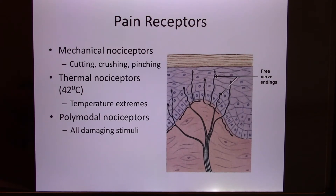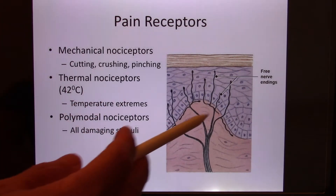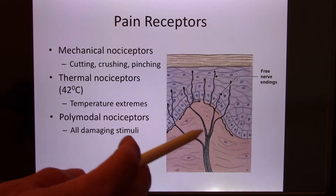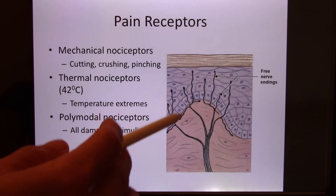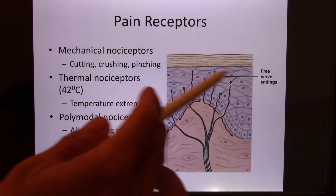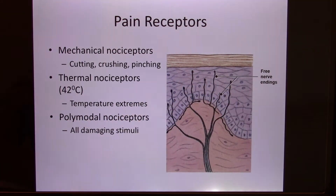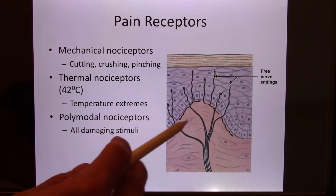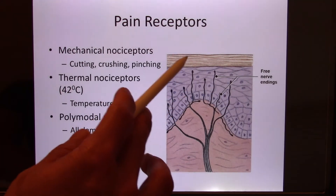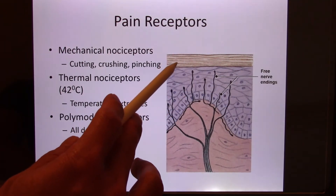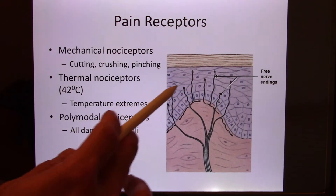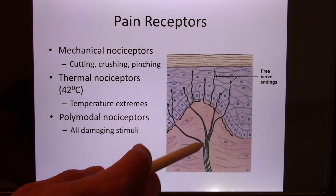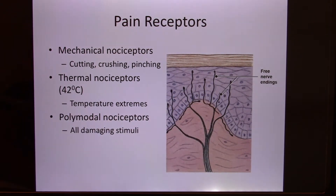Now let's look at something we did not cover last time: the pain sensation. The pain from your skin — your skin has free nerve endings. That's the first sensory neuron, and it's a simple receptor with no special structure. If you damage your skin, the damaged tissue will release chemical signals, which are picked up by the free nerve endings and send the signal to your brain, and you feel the pain sensation.